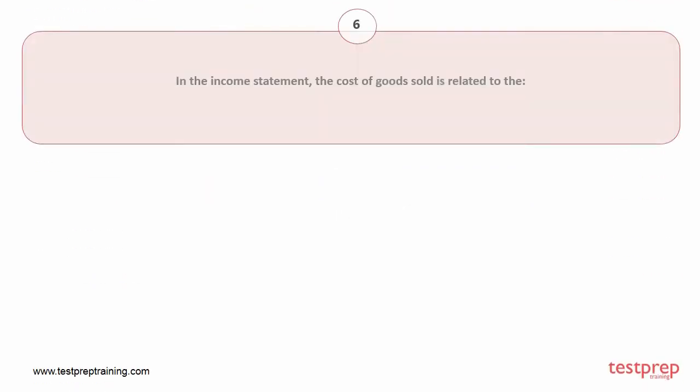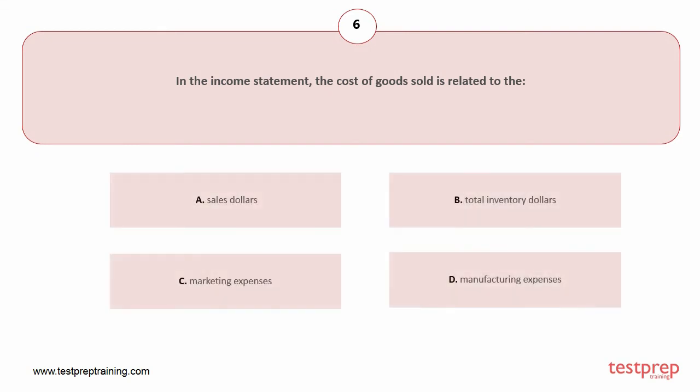Question number six: In the income statement, the cost of goods sold is related to the options: A) sales dollars, B) total inventory dollars, C) marketing expenses, D) manufacturing expenses. The correct answer is option D.